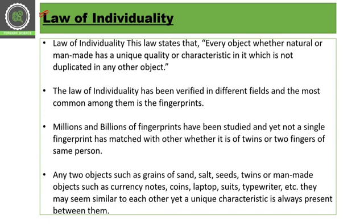The law of individuality says that every object — it doesn't matter if it's natural or man-made — has some unique characteristic features. They have unique quality and characteristics which are not duplicated in any other object. This law is really very important and applicable in every crime scene with every evidence, because each and everything, natural, man-made, or machine-made, has unique characteristic features by which we can identify or eliminate them.